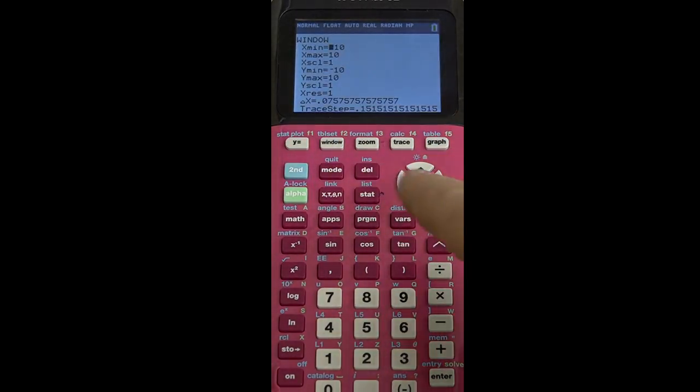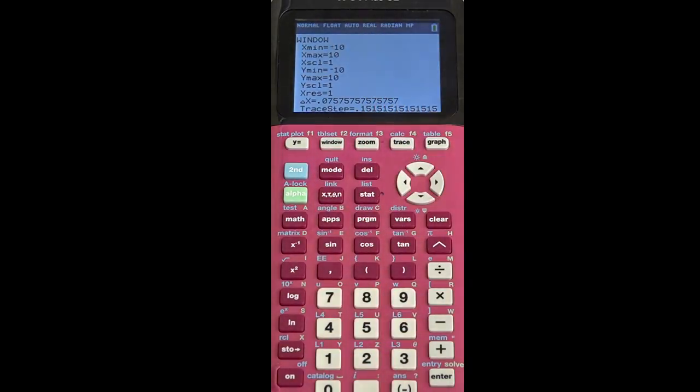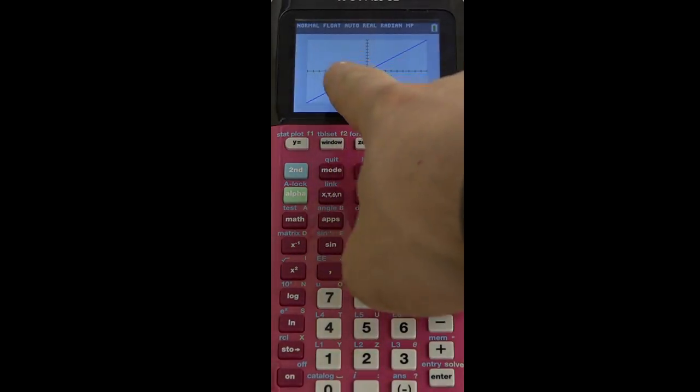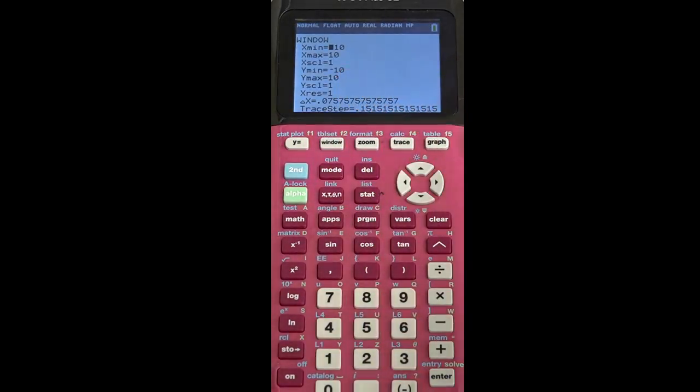When I press the window button right here, you can see that it's going to go from negative 10 in the x-direction to positive 10 in the x-direction and every one unit it's going to put a little tick mark. These little tick marks here show up on the x-axis. Now also, another part of zoom standard is that we're going to go from a y-min of negative 10 to a y-max of positive 10 with tick marks every one.